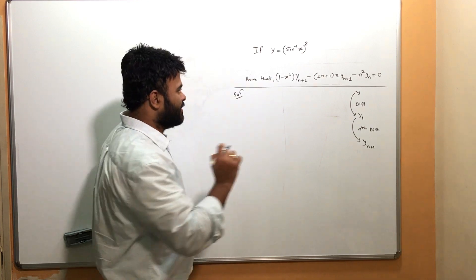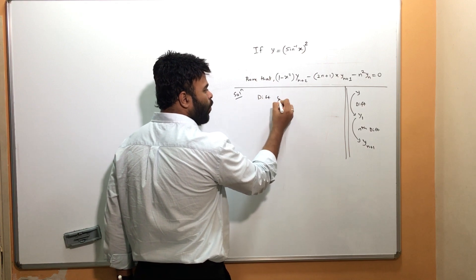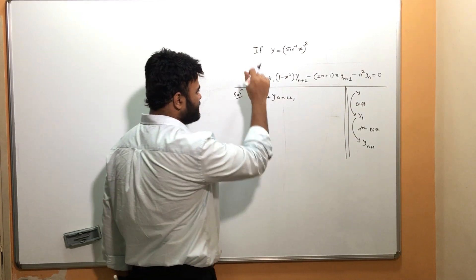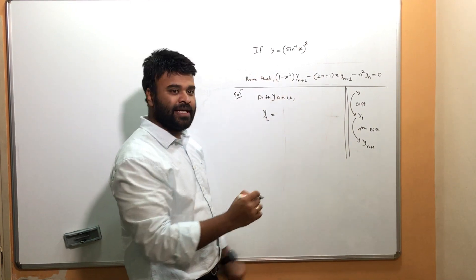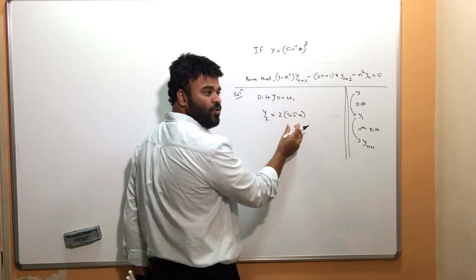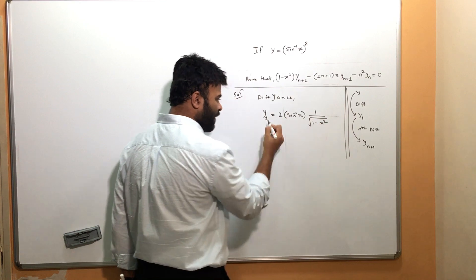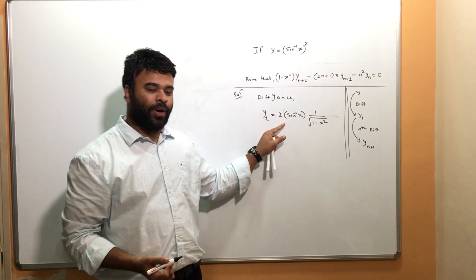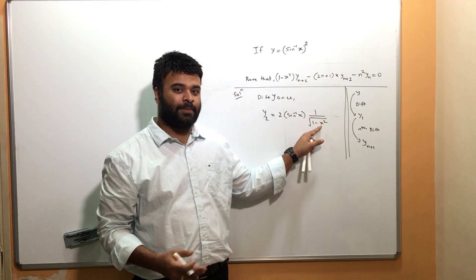We have y = (sin⁻¹x)². The first step is to differentiate y once. So dy/dx, which is y₁, equals 2·sin⁻¹x times the derivative of sin⁻¹x by the chain rule, which is 1/√(1-x²). So y₁ = 2·sin⁻¹x / √(1-x²). Now the next step is to square this, because I don't want the root.